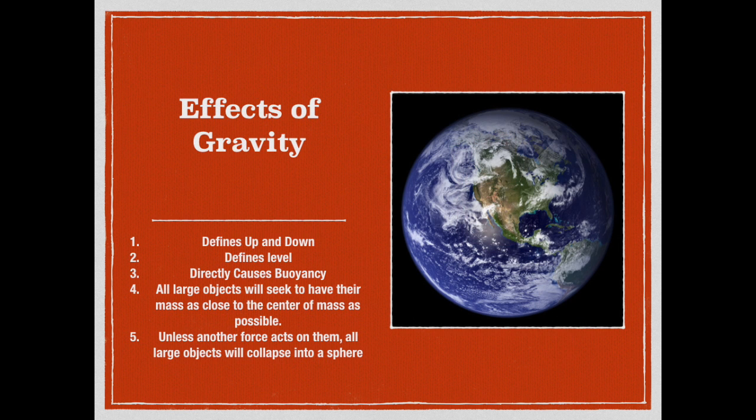Well first let's go over a few effects of gravity. Gravity is what tells us what is up and what is down. Gravity directly causes buoyancy and all things tend to move towards the center of gravity. Gravity is what holds water, us, and everything else on the surface of the Earth. And finally because gravity causes all mass to try and migrate towards the center of mass all large objects will collapse into a sphere.